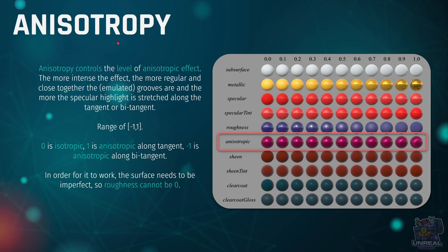Talking about anisotropy in Unreal Engine, there are two pins we need to account for: first, anisotropy, and next, tangent. The anisotropy pin controls the level of the anisotropy effect. As we go from minus one to one, it will make the anisotropy effect more or less apparent. The more regular and close together the emulated grooves are, the more the specular highlight will be stretched along the tangent or bitangent.